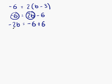So we have negative 2b equals minus 6 add 6. That means negative 2b equals 0. Negative 2b equals 0. So that means b is also equal to 0. And that's our final answer.